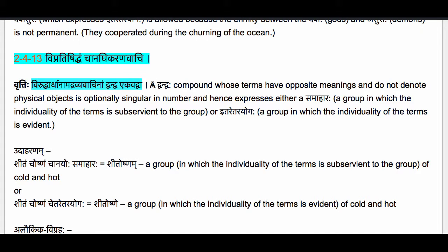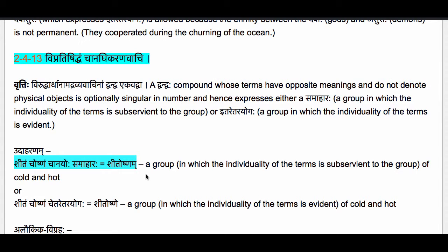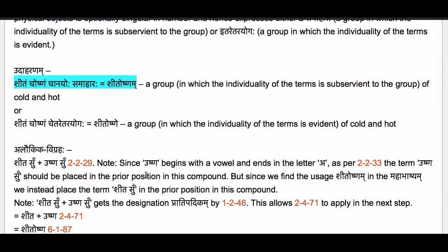This means a Dvandva compound whose terms have opposite meanings and do not denote physical objects is optionally singular in number, and hence expresses either a Samaharaha — a group in which the individuality of the terms is subservient to the group — or Itare Tarayogaha — a group in which the individuality of the terms is evident. For example, Sheetancha Oshnancha — Anayoha Samaharaha — a group of cold and hot.